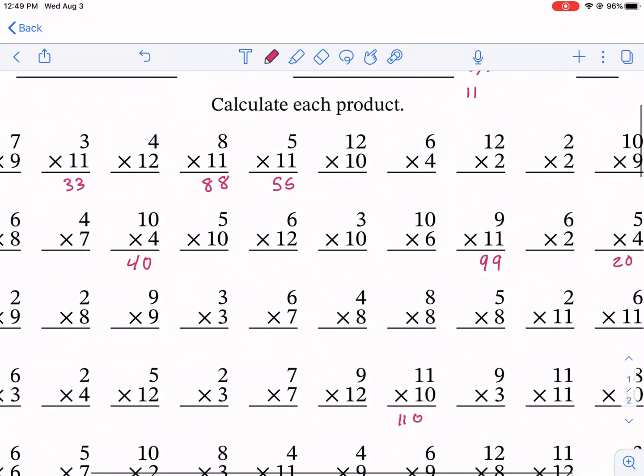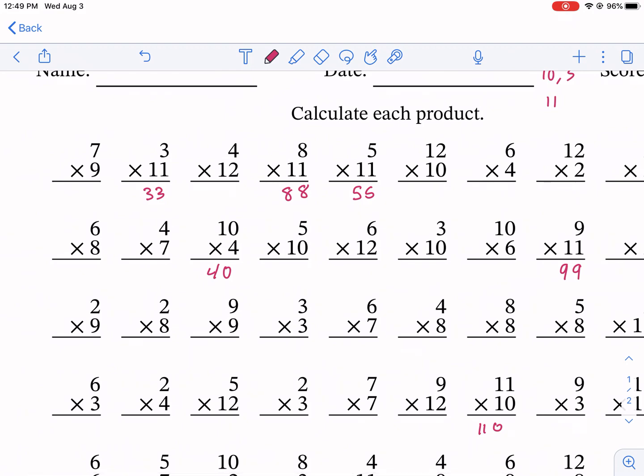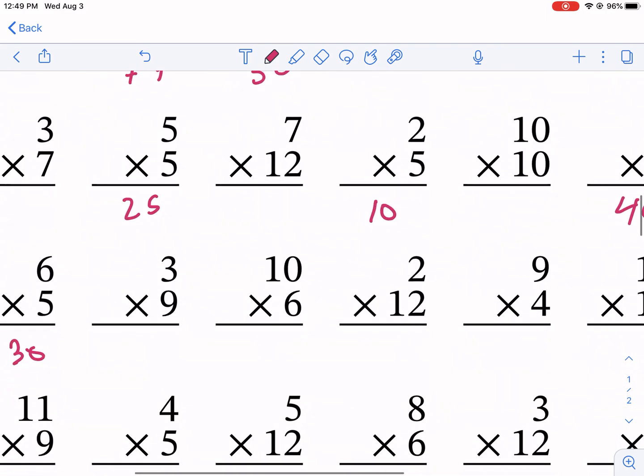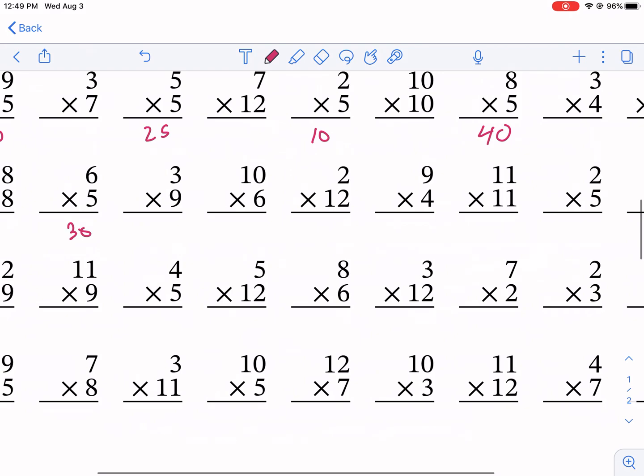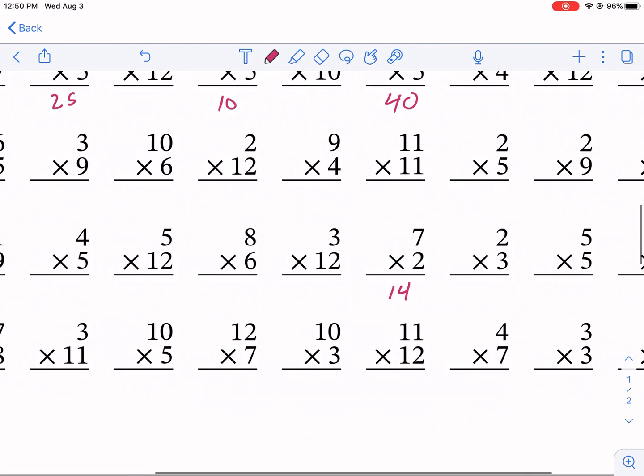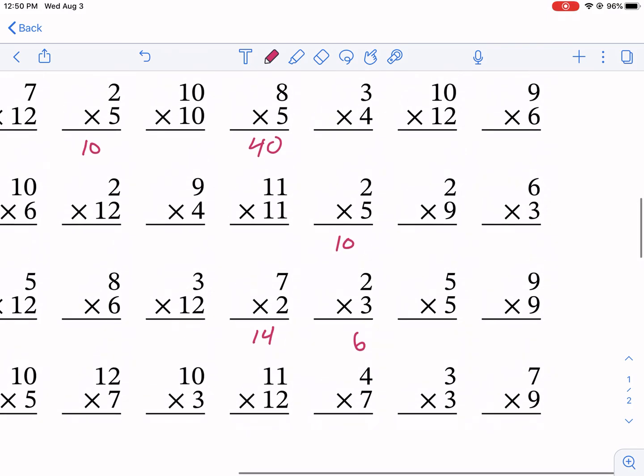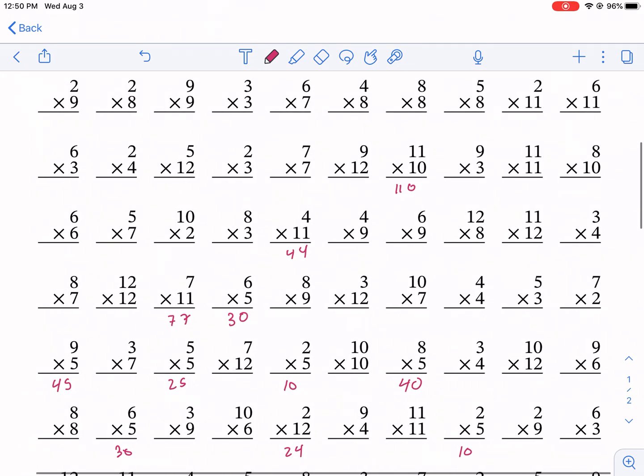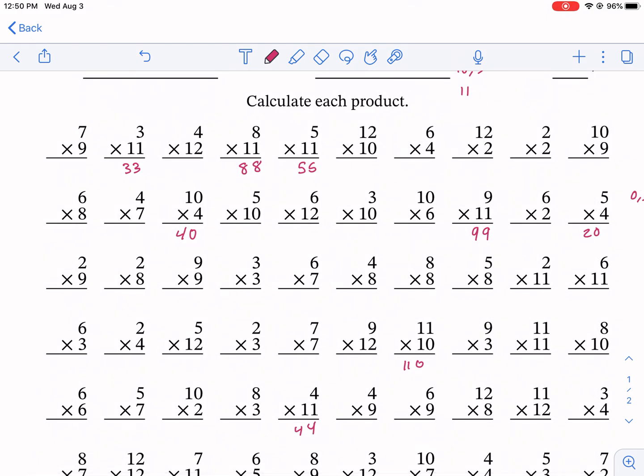Now for some of these other ones you're just gonna have to memorize. Twos are all gonna be evens. Two times ten is ten, they're always gonna be an even number for two and it's gonna end in either two, four, six, eight, or zero. We have 14 here, double the number essentially is what you're doing with the twos. Threes, fours, sixes, six, seven, and eights are typically the toughest for some students to remember.